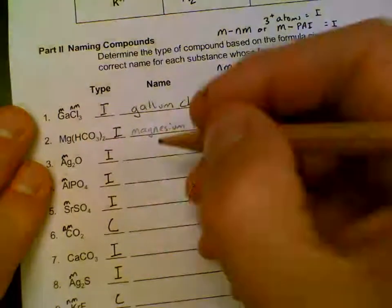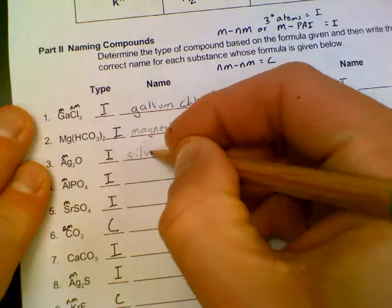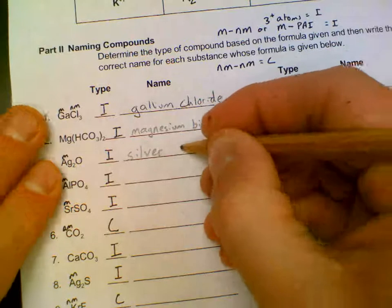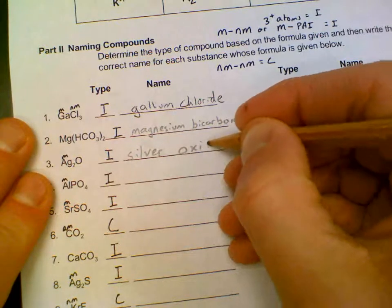Silver, since it's a metal, gets its full name. O gets the anion style name, oxide, with the I-D-E ending.